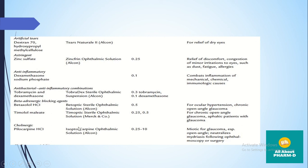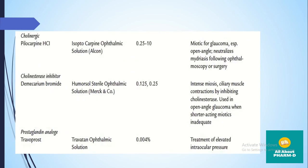This covers ophthalmic agents by category and their purposes. Meiosis refers to constriction of the pupil and ciliary muscle contraction by inhibiting cholinesterase, managing open-angle glaucoma using short-acting miotics.